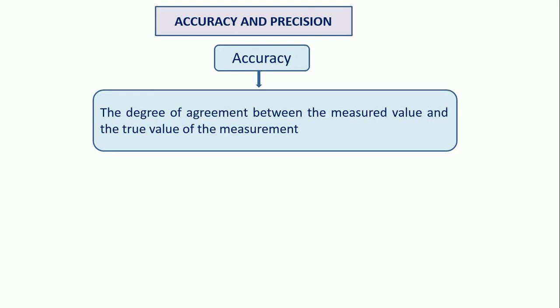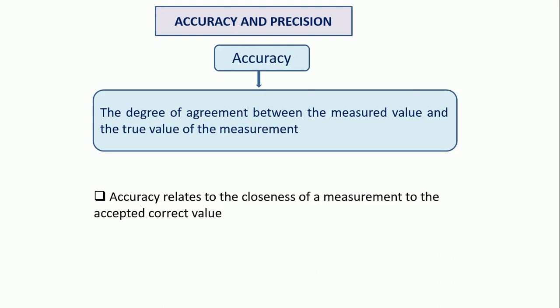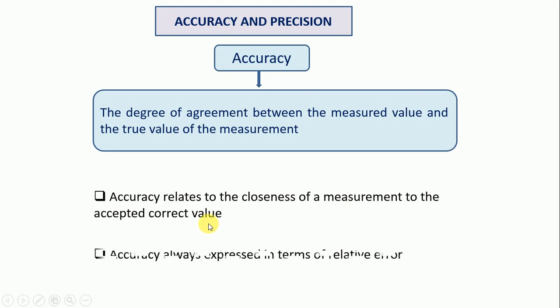If there is closeness, or if there is a degree of agreement between measured and true value, then it is accuracy — your expected value is closer. Accuracy relates to the closeness of a measurement to the accepted correct value. And accuracy is always expressed in terms of relative error.